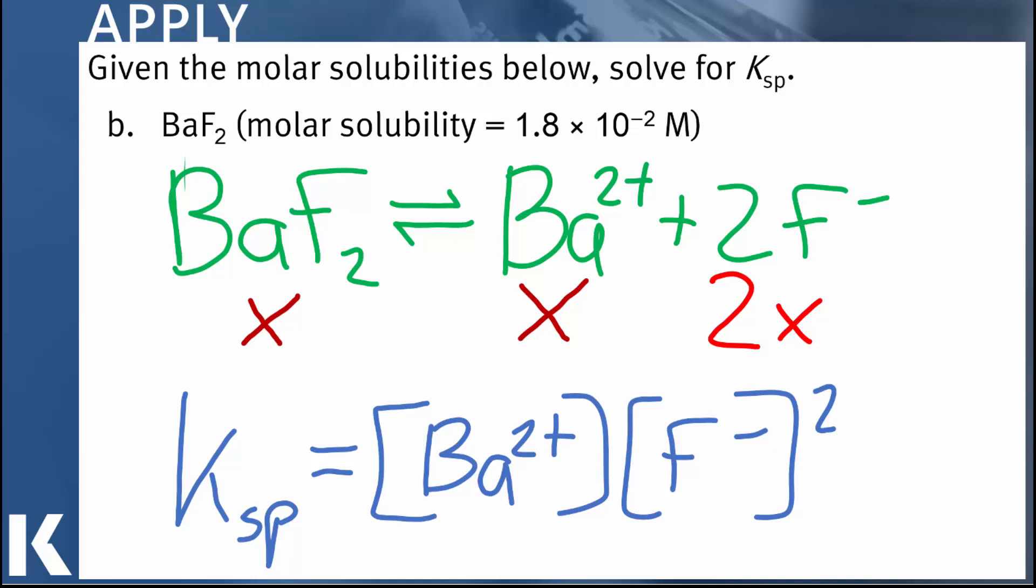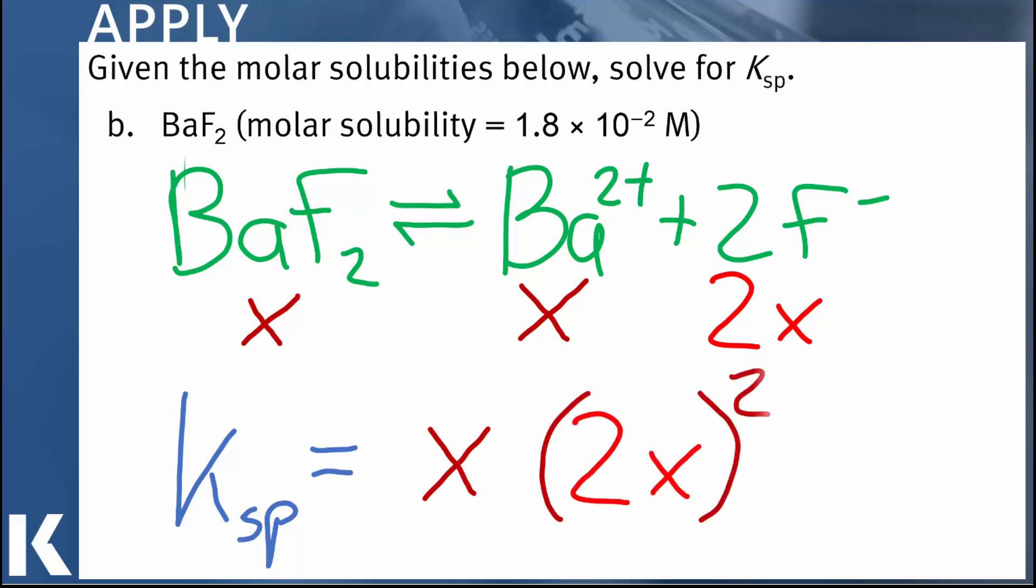So that's the wrinkle here, and look how this plays out. So if we now substitute these values into our Ksp expression, we're going to put X in for the barium concentration, but we're going to have to put 2X in for the fluorine concentration. Since the fluorine concentration gets squared in the Ksp expression, that means that that's going to turn into 4X squared in that term. Collecting all of our terms together, we can see that the Ksp equals 4X cubed.